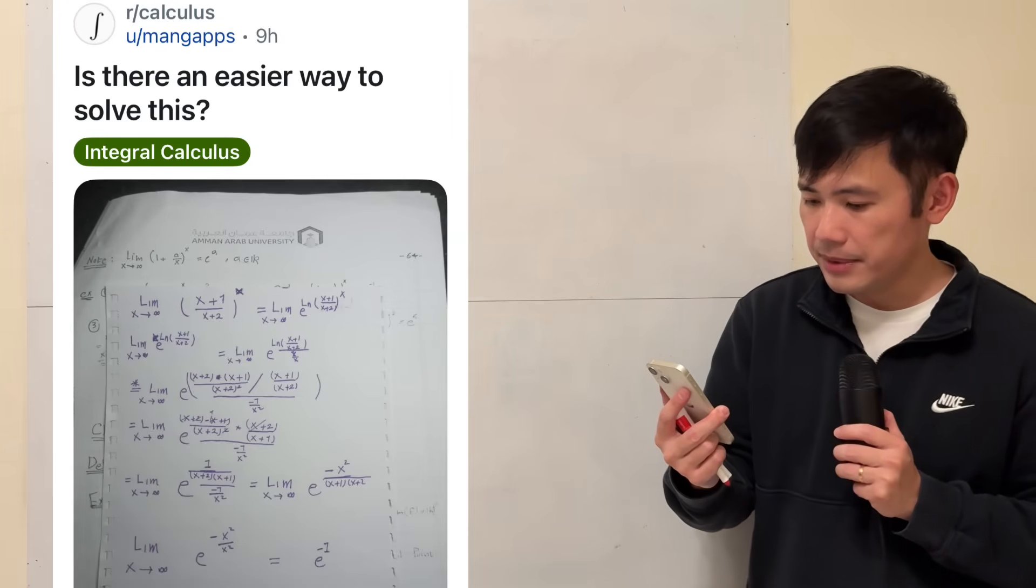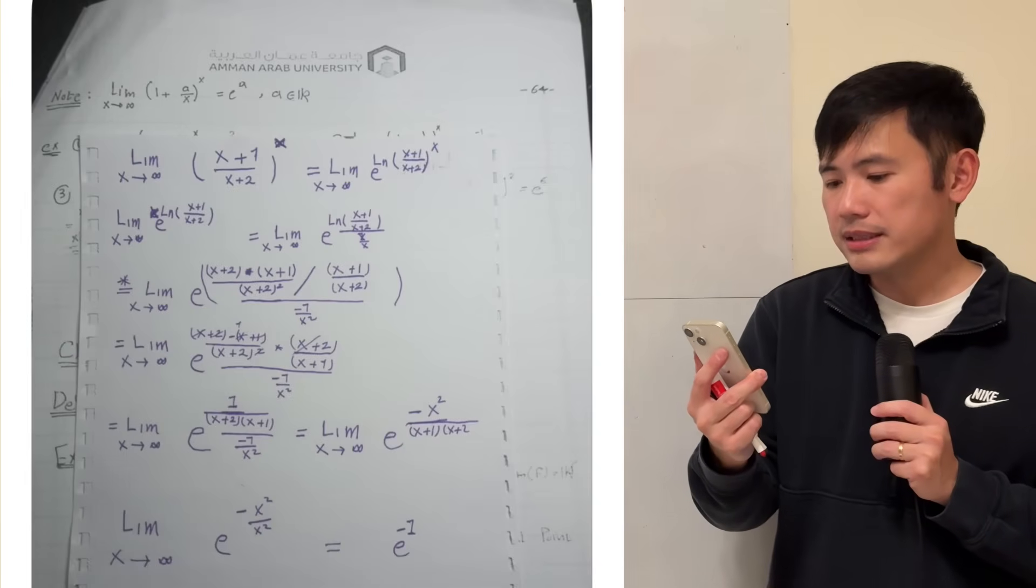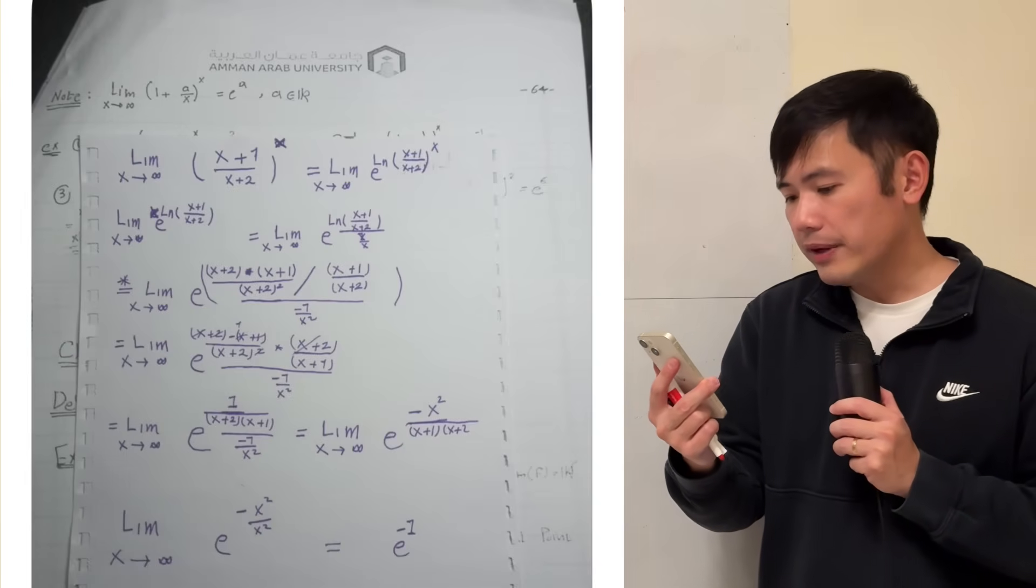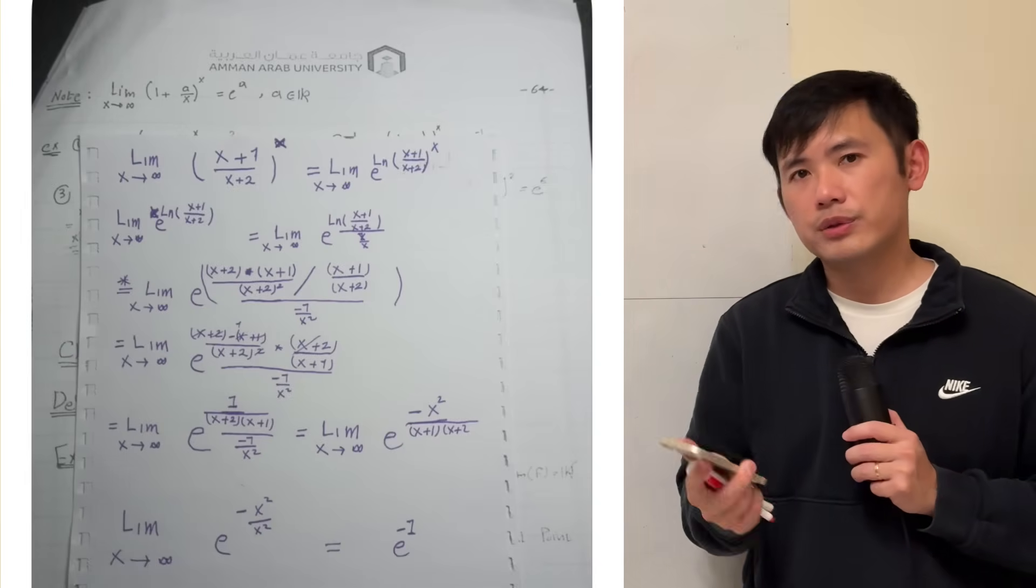Is there an easier way to solve this limit? Here we have the limit as x approaching infinity of x plus 1 over x plus 2, whole thing raised to the x power.